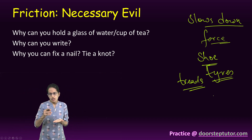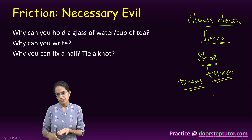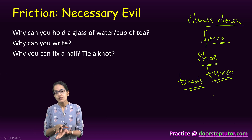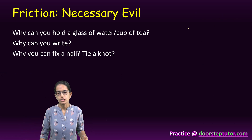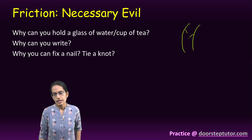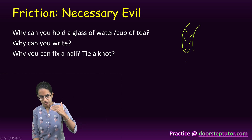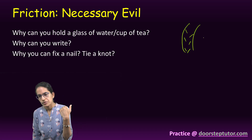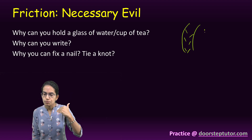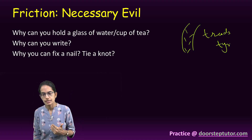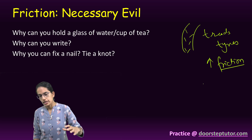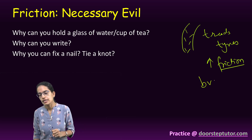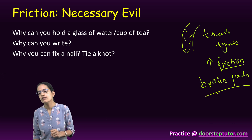The sole of a shoe reduces friction when worn out. If the sole is good, it increases friction and does not allow you to slip. Similarly, if tires have proper grooves and depressions — called treads — it increases friction and prevents slipping. In the braking system of automobiles, brake pads are present and they increase the friction.